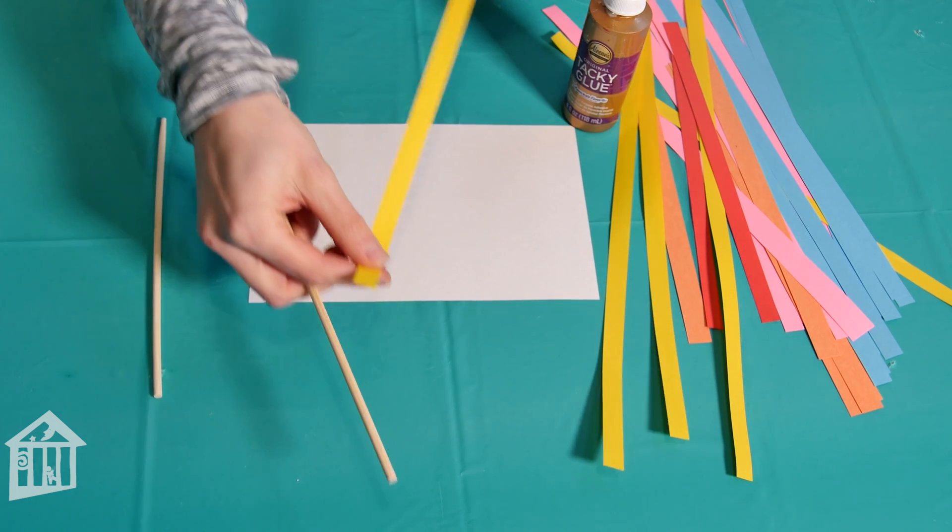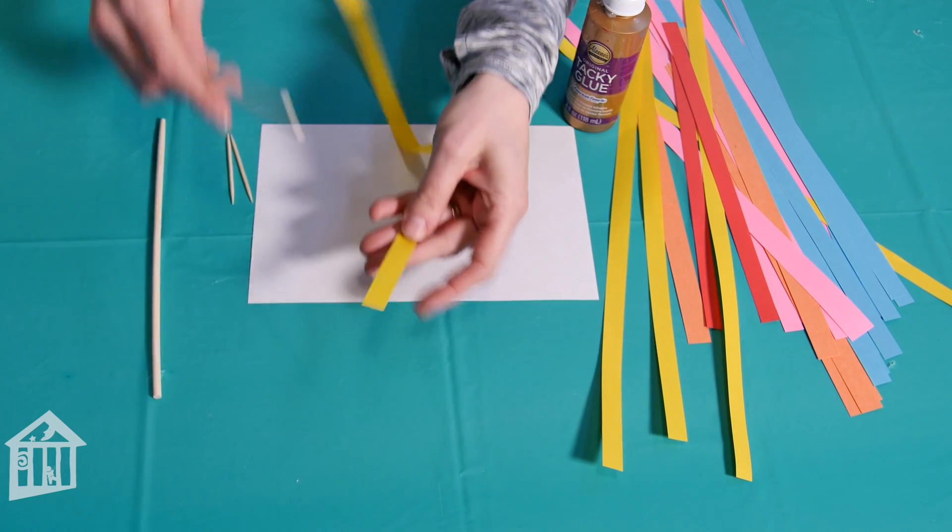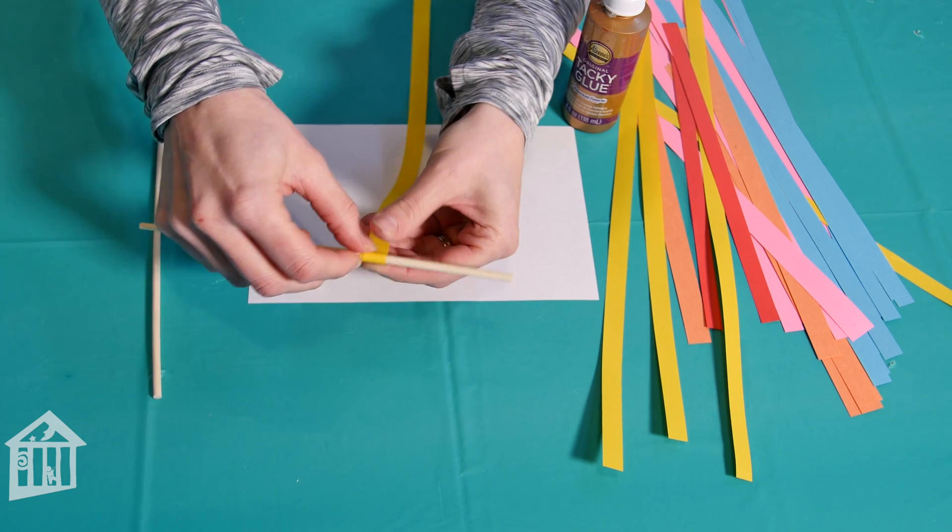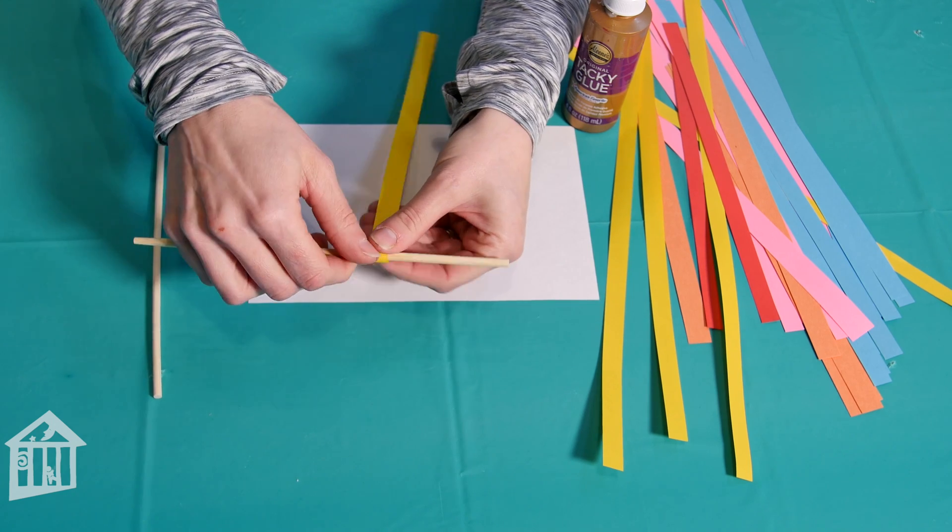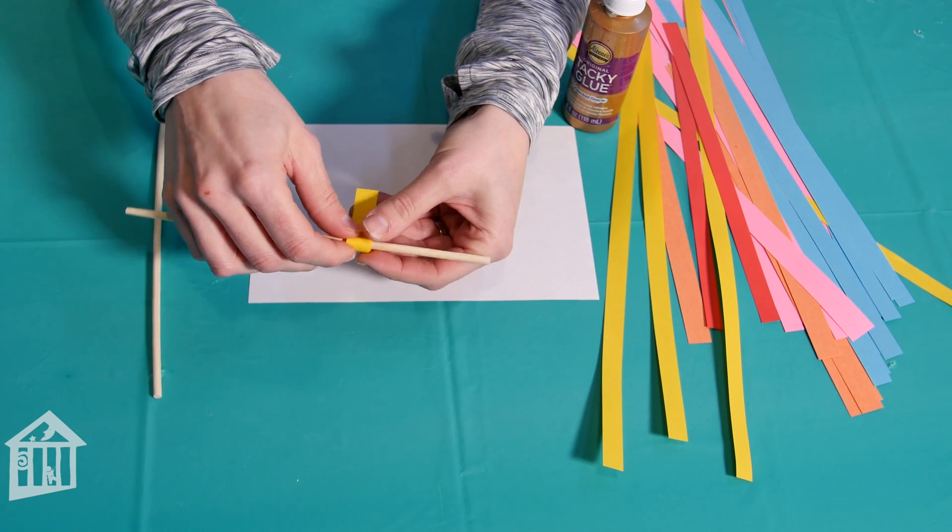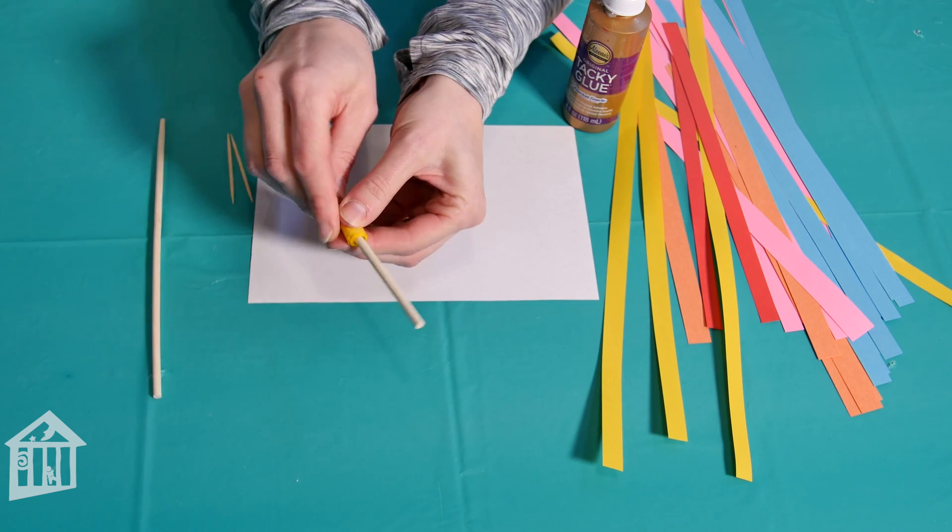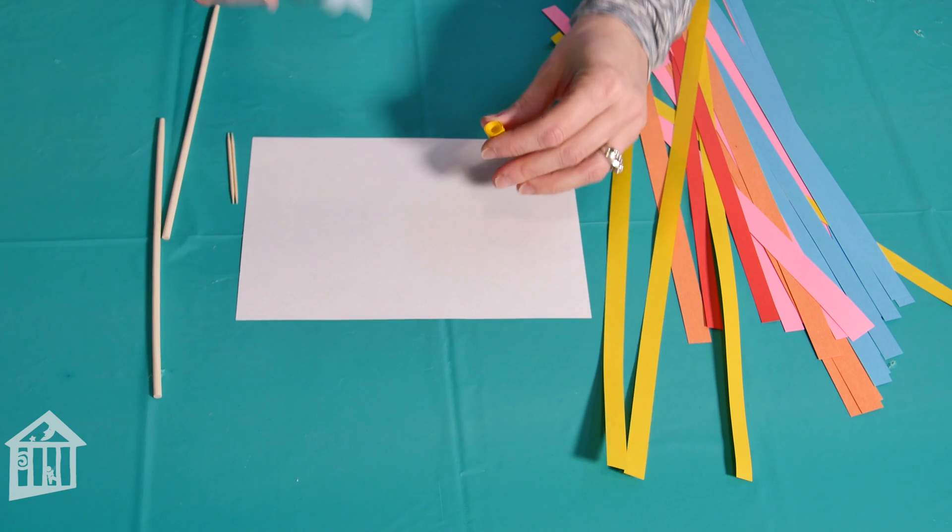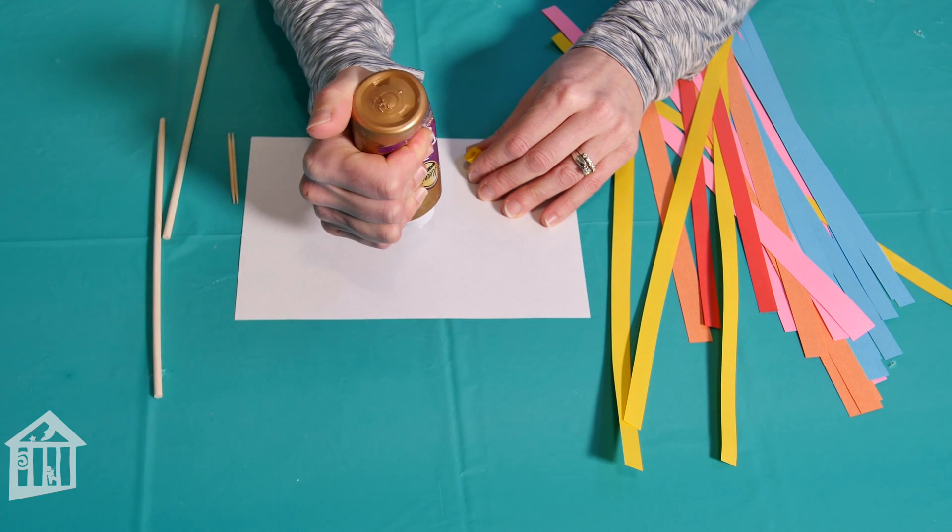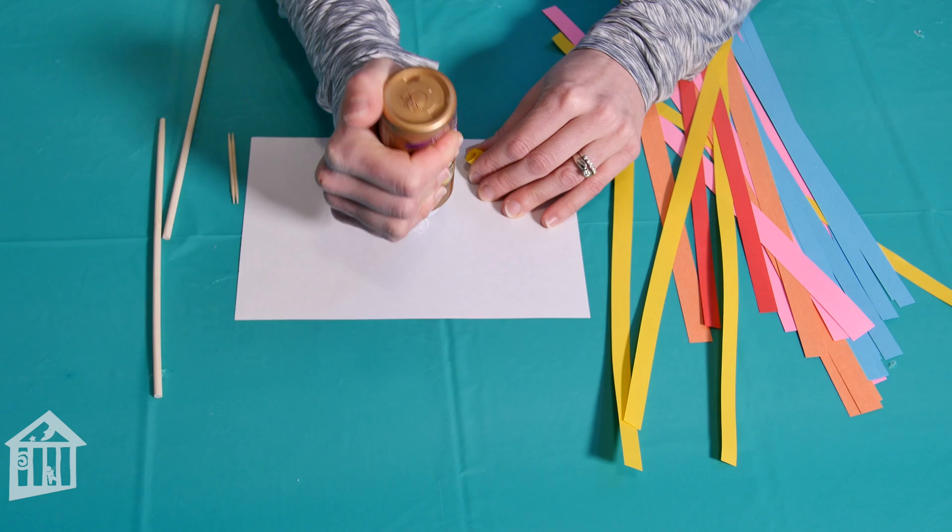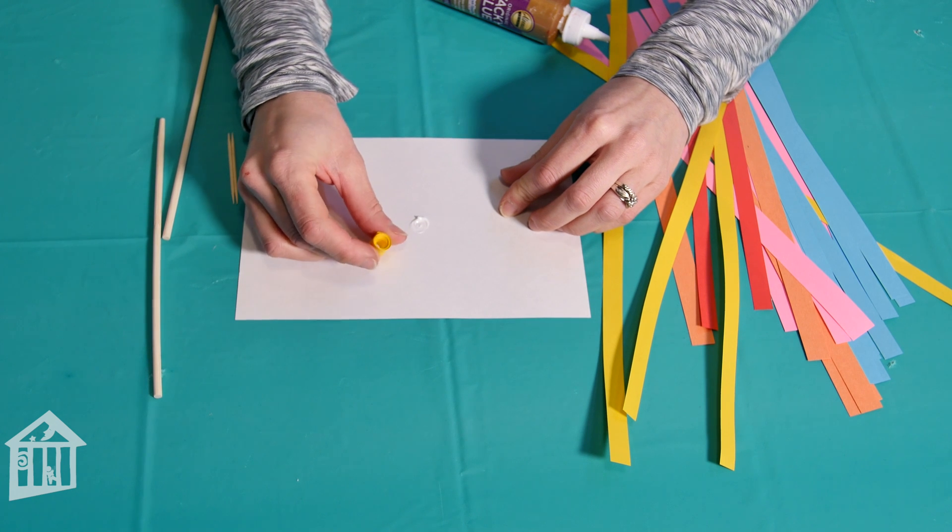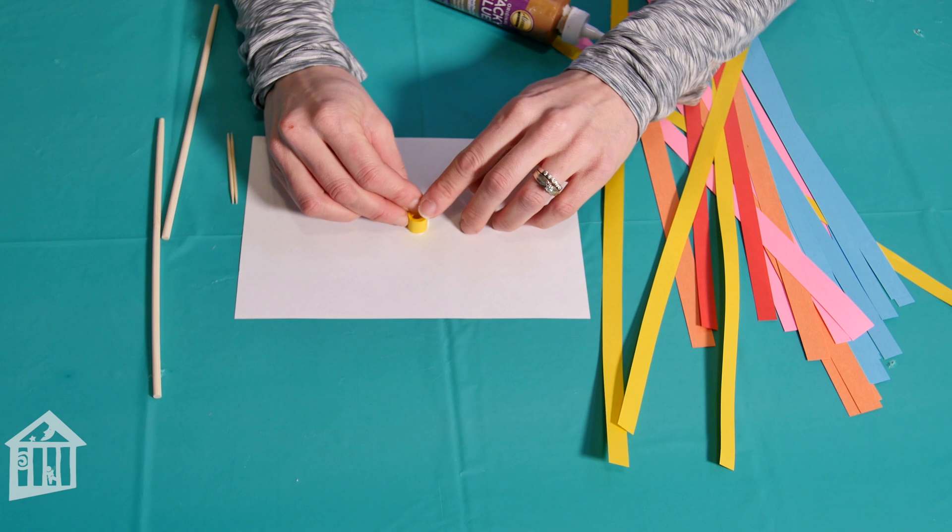The basic technique for paper quilling involves taking one of those long strips of paper and just winding it around a thin stick. So in this case I'm using one of those chopsticks and I'm just going to roll it up all the way to the end just like this. I can slide it off the end and one way I can attach it to my piece of cardstock is by just putting a little craft glue in the middle and then I can either keep it nice and tight like this or if I want I can let it loosen up just a little bit before I set it on my glue.